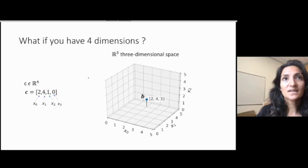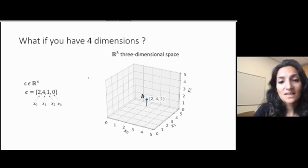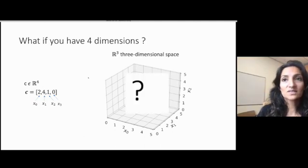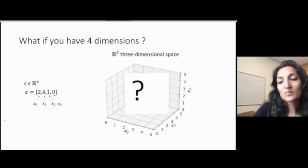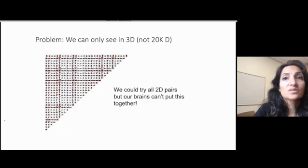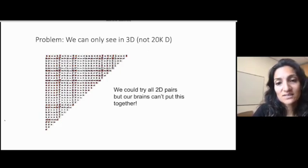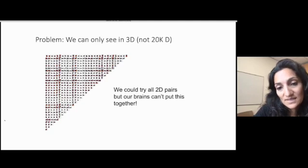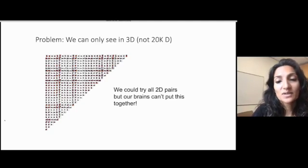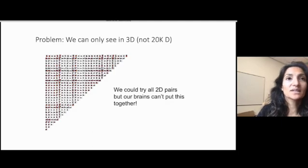But one of the problems is that as the number of features grows, you can no longer simply visualize directly the features of the data. So if you can only visualize in two or three dimensions, how would you visualize point C? You could try to visualize projections that are in 2D, for example. But it might be very hard to put all of these pairs together, particularly as you start to have more and more dimensions.